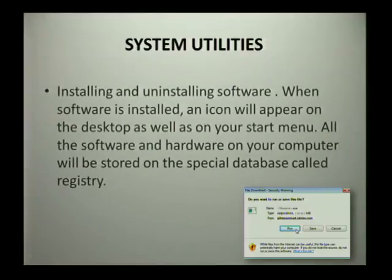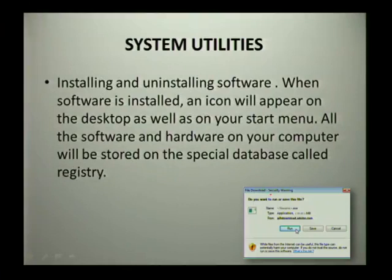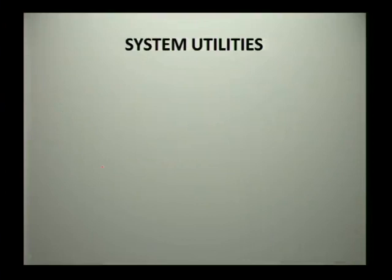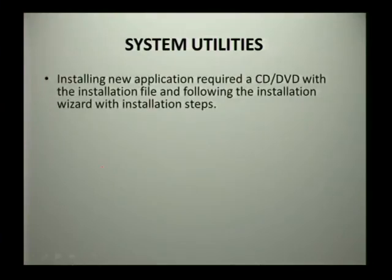Now we are going to look at some system utilities, focusing on installing and uninstalling software. When software is installed, an icon will appear on your desktop as well as on your Start menu to show that the specific software has been installed. All software and hardware on your computer will be stored on a special database that we call a registry.